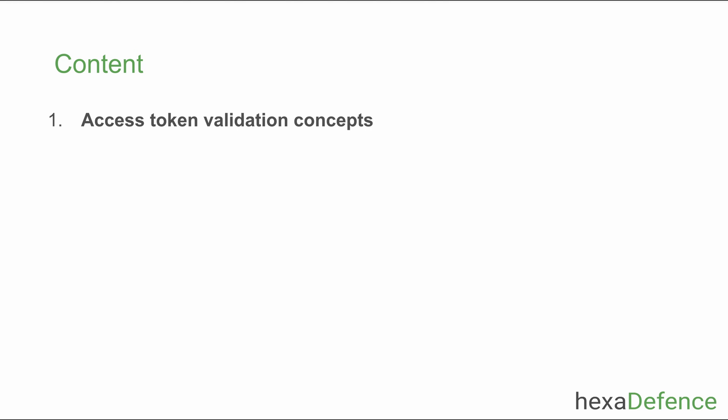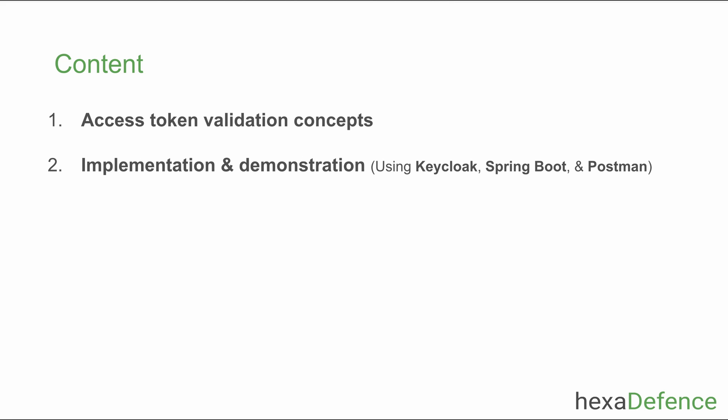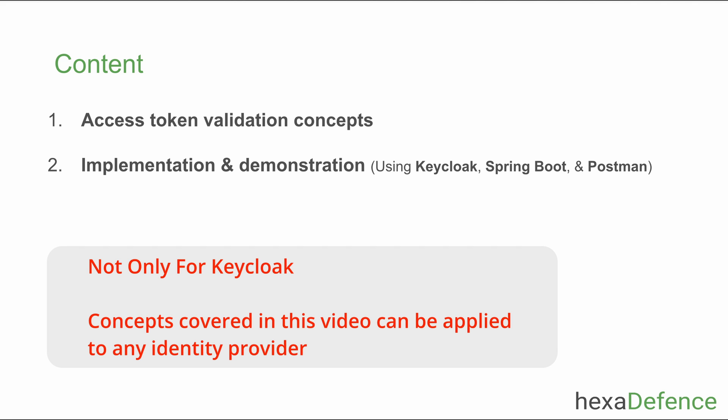This video will take you through the necessary information you should know to validate a JWT access token generated by Keycloak. For the demonstration I have used a Keycloak identity provider and a backend API made with Spring Boot. This video is made in a general way so you can learn how to validate access tokens from any other identity provider other than Keycloak as well.